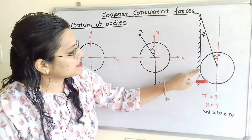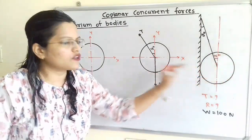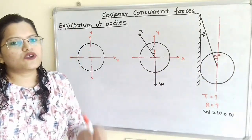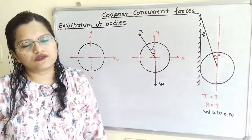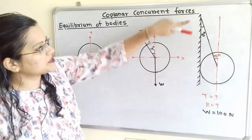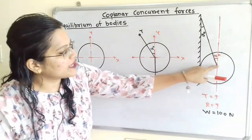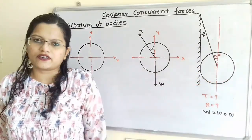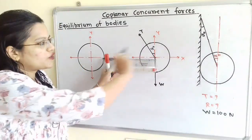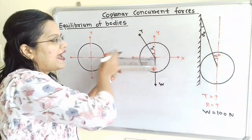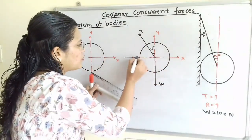Here is the point of contact of the wall with the sphere. The action force is applied by the sphere on the wall, and therefore the normal reaction R is developed by the wall on the sphere. We show the normal reaction R perpendicular to the surface at the point of contact. This point of contact, if extended, passes through the center of the sphere. So the normal reaction R is a horizontal line directed towards the right-hand side.